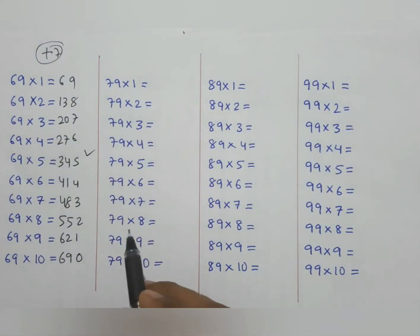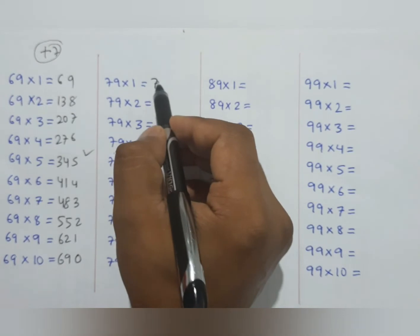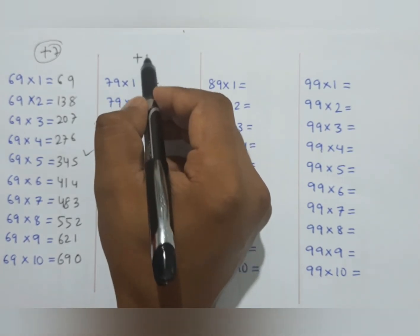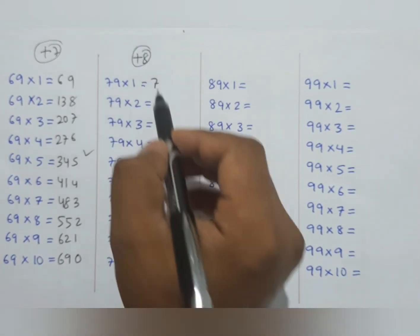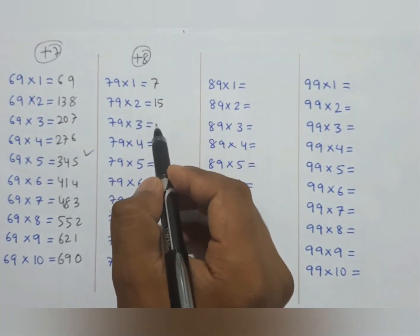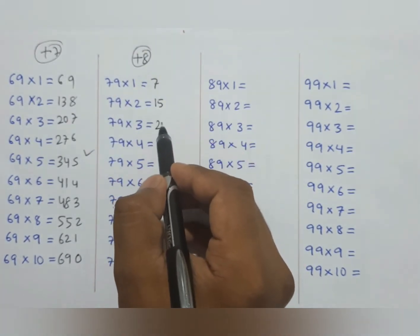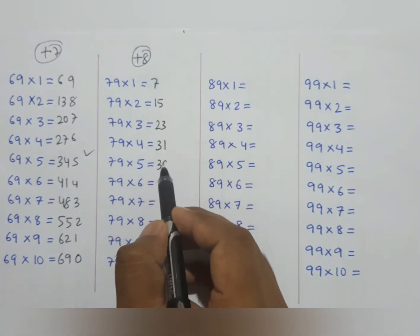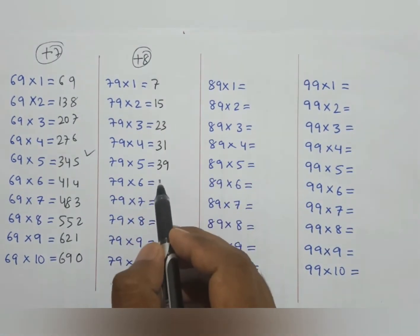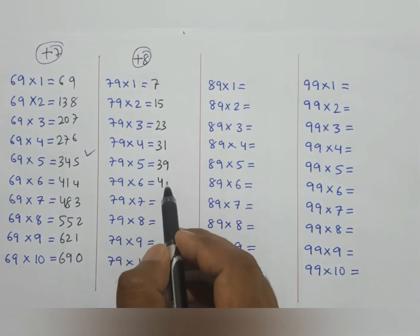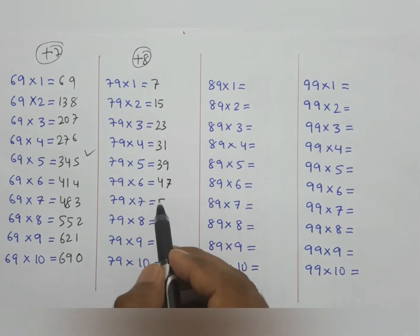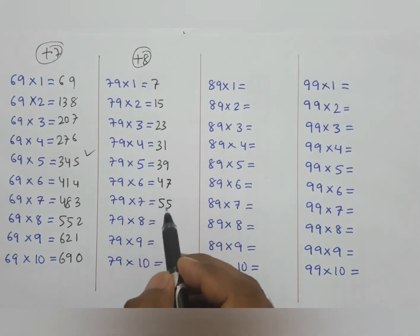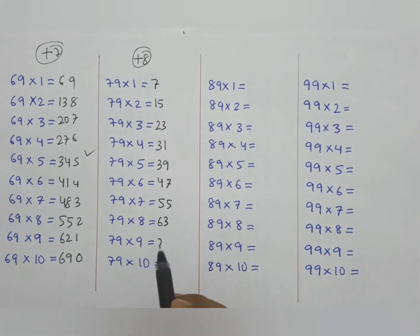Now we have 79. The left side starts from 7 and we add plus 8 each time: 7, 15, 23, 31, 39, 47, 55, 63, 71, 79.